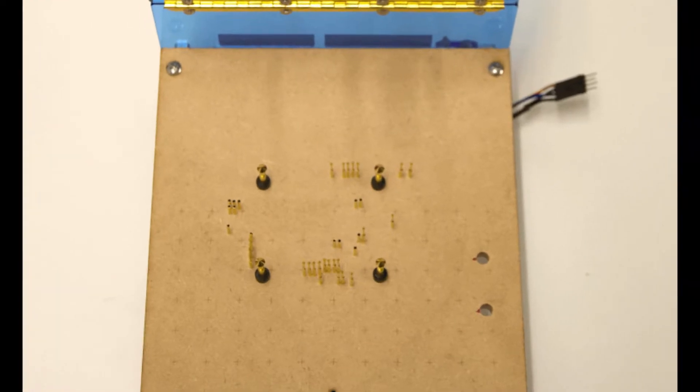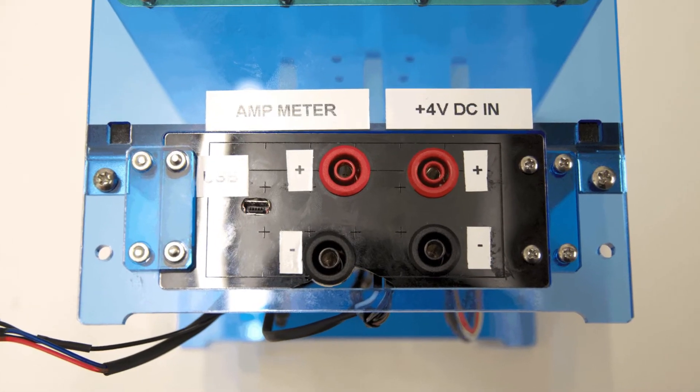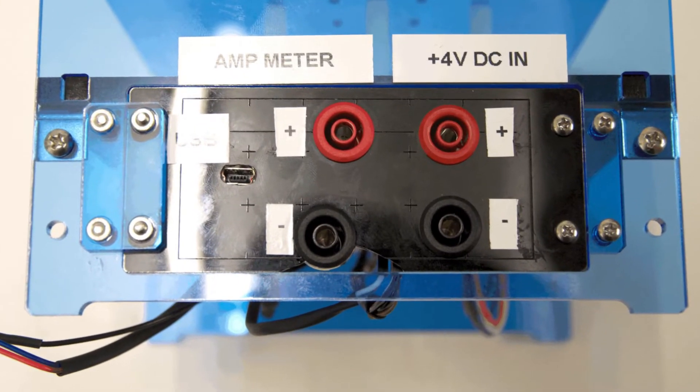The fixture has the usual set of test probes and rear panel connectors for applying power, measuring current, and programming the onboard microcontroller via a JTAG interface.